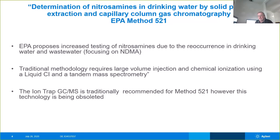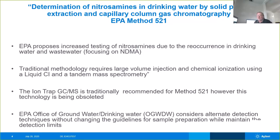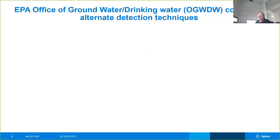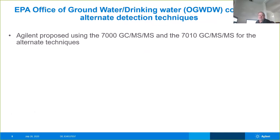The ion trap GCMS is traditionally recommended for Method 521. However, since we acquired Varian — and this was their primary instrument of choice — we found that we can move a lot of these types of analyses onto the triple quad platform and get comparable or better results. So we've decided to obsolete those particular product lines. The EPA Office of Groundwater and Drinking Water considered all the detection limits without changing the guidelines for sample preparation, and we proposed using the 7000 GCMS-MS and the 7010 GCMS-MS for the alternate techniques.